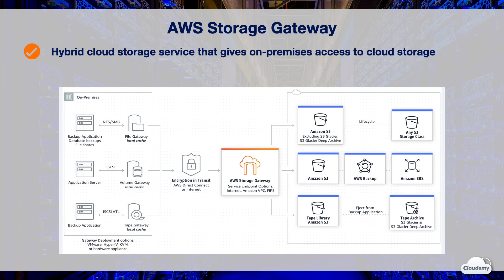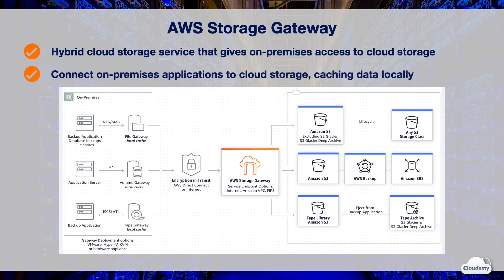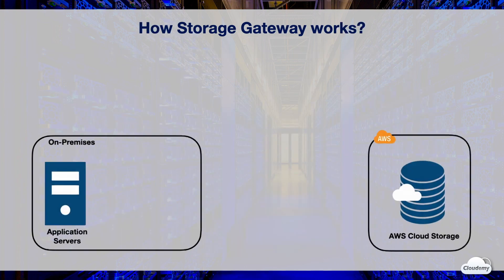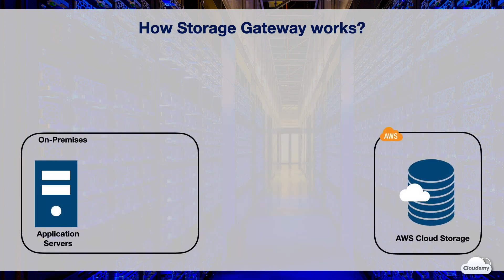Use cases include moving backups to the cloud, using on-premises file shares backed by cloud storage, and providing low-latency access to data in AWS for on-premises applications. Storage Gateway seamlessly connects on-premises applications to AWS cloud storage, caching data locally for low-latency access. Here's how Storage Gateway works: suppose you have an application running on-premises.